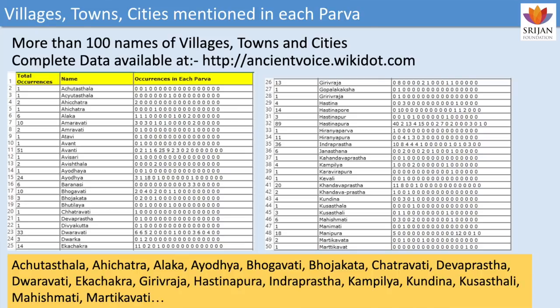The names have not changed. Each of these particular cities — in which Parva of Mahabharata it is present — is indexed. So '001' means it is mentioned in Vanaparva, which is the third Parva. Using this index, you can know which place is mentioned in which Parva, and go into that particular Mahabharata Parva and look at the details.